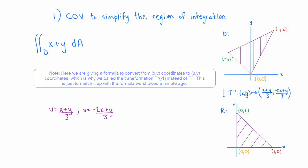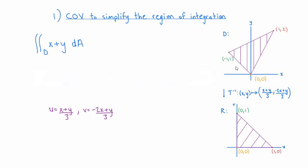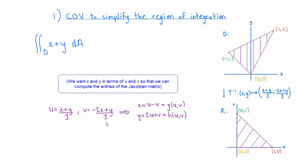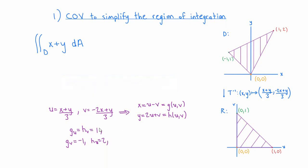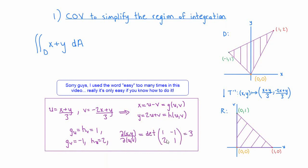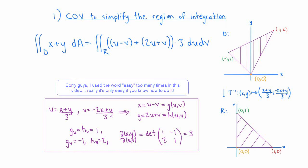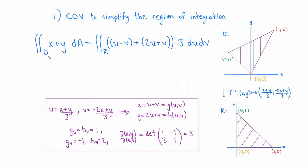It's easy to see by just considering what happens to the vertices that this linear transformation maps the triangle D to the right triangle pictured here. Thinking ahead a little bit about the change of variables formula, we're going to want to have x and y written in terms of u and v. It's pretty easy to solve for x and y in these equations and we find that x equals u minus v and y equals 2u plus v. Those are the functions that we call g and h in our change of variables formula. The partial derivatives of g and h with respect to u and v are easy to read off from this. Substituting them into the Jacobian matrix, we find that the determinant of the Jacobian in this case is equal to 3. That's all the information we need in order to complete our change of variables. The original integral now becomes the double integral over R of (u minus v plus 2u plus v) times the absolute value of the determinant of the Jacobian, du dv.